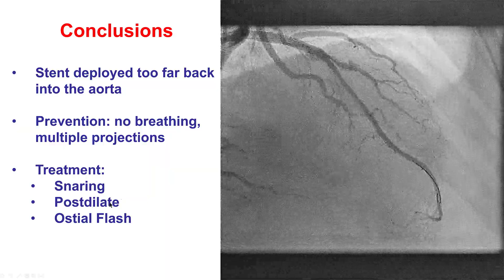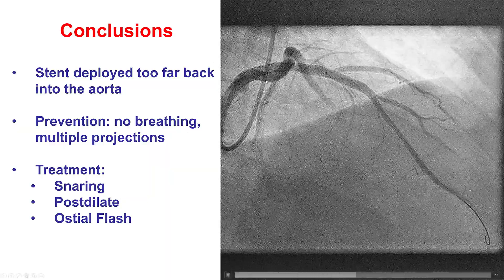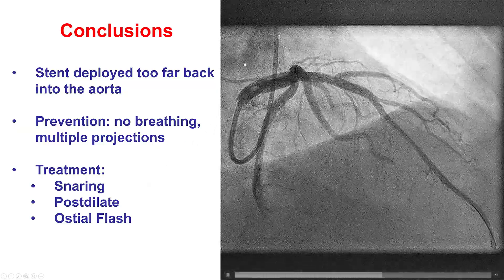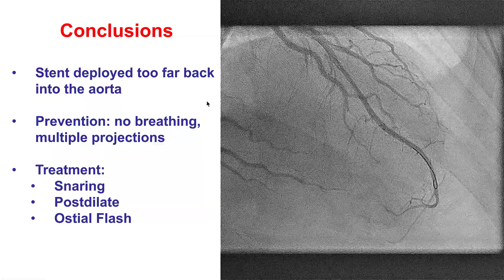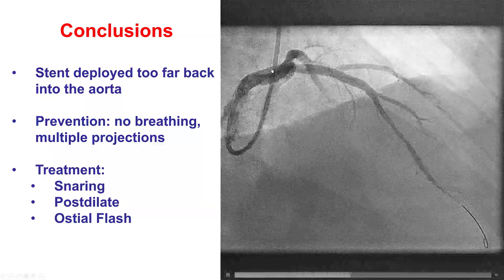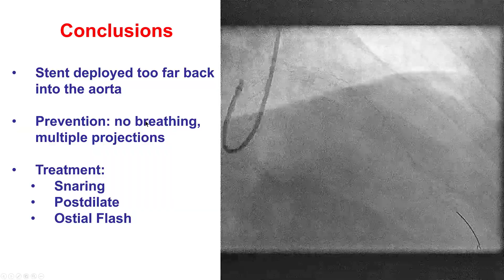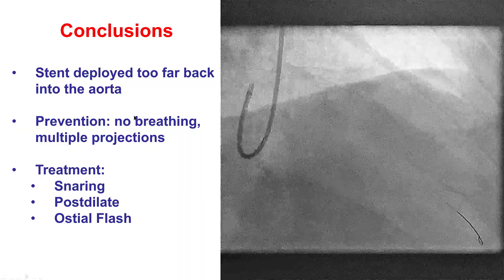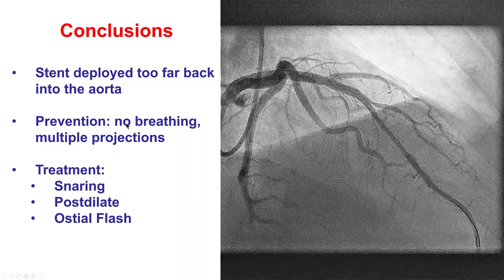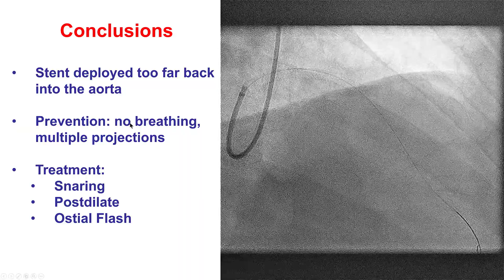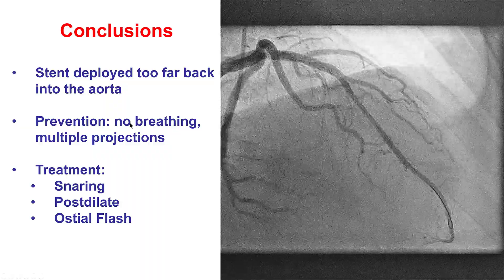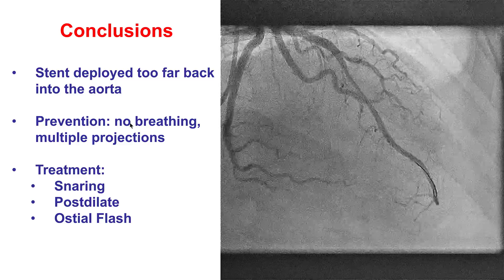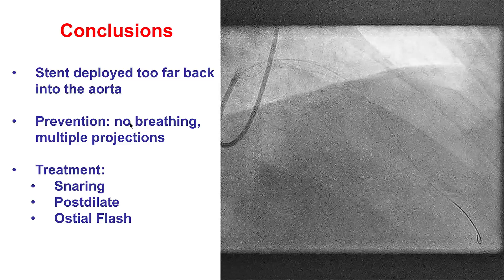Another option, as we did in our case, is to post-dilate the part of the stent that is in the left main and then use the ostial flush balloon in order to facilitate subsequent re-engagement of the coronary artery in case the patient needs repeat coronary angiography. But the most important part is to actually try to prevent such complications. When deploying a stent, it is important to minimize patient breathing, ask the patient not to move, and use multiple projections to ensure the stent is in the desired location prior to inflating the stent balloon.